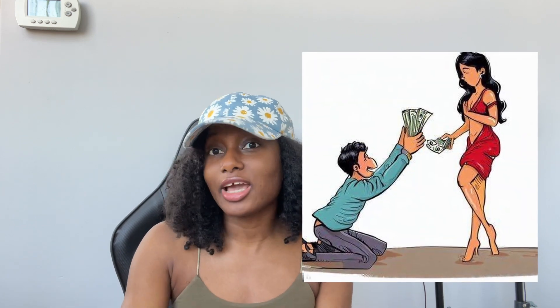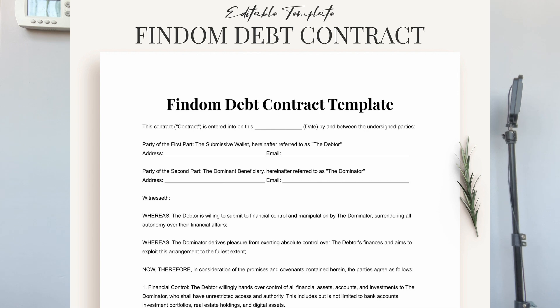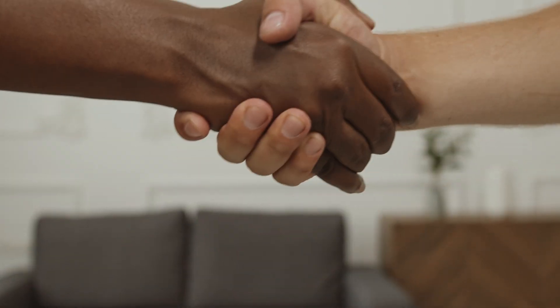If you don't know what it is, you're new here — go watch my other videos. Financial domination debt means the sub owes money to a dom and has to pay. The debt contract is mostly created by the dom, and it's an agreement between the dom and the sub — it's consensual. It also shows some kind of ownership the dom has over the sub.